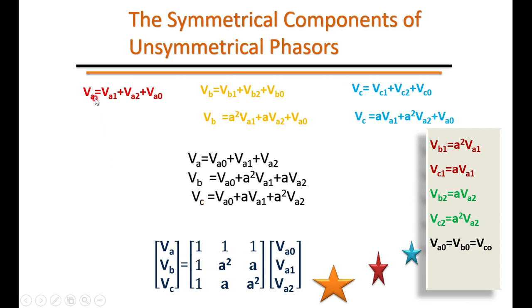This is how we synthesize unsymmetrical phases into their symmetrical components, expressing everything in terms of the components of phase A — VA0, VA1, and VA2.